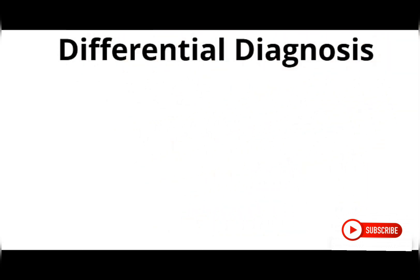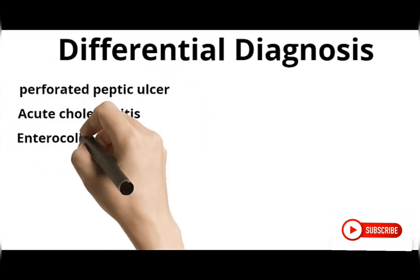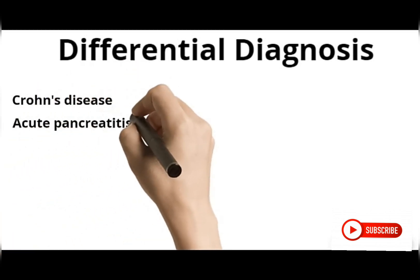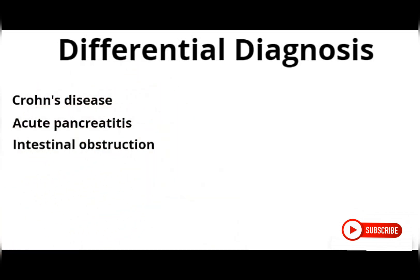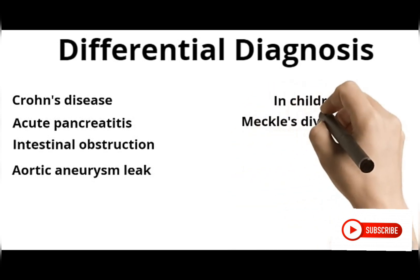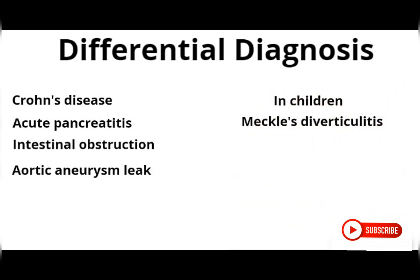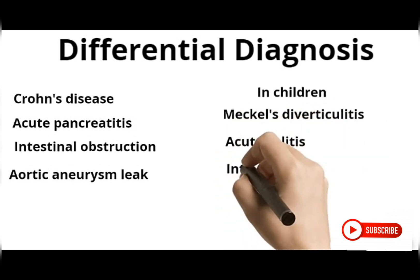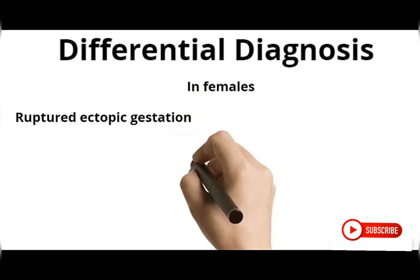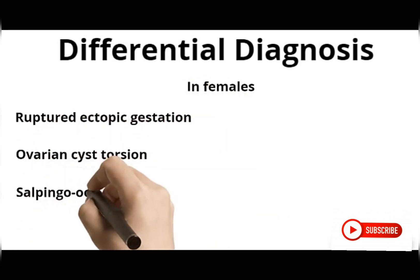Some differential diagnoses to suspect when you have a case of acute appendicitis include: perforated peptic ulcer, acute cholecystitis, enterocolitis, right acute pyelonephritis, mesenteric ischemia, Crohn's disease, acute pancreatitis, intestinal obstruction, and aortic aneurysm leak. In children, also suspect Meckel's diverticulum, colitis, acute colitis, intussusception, and roundworm colic. In females, also suspect ruptured ectopic pregnancy, ovarian torsion, and salpingo-oophoritis.